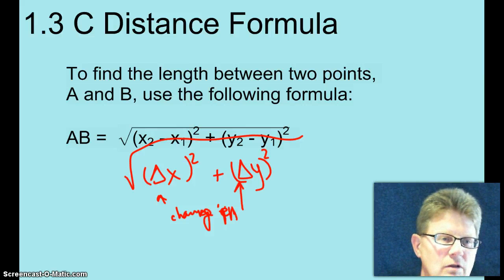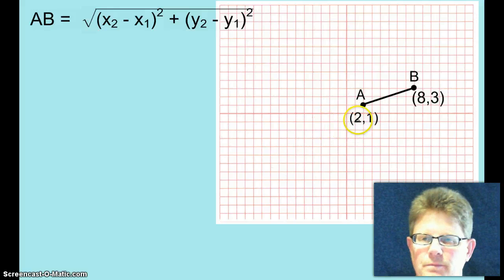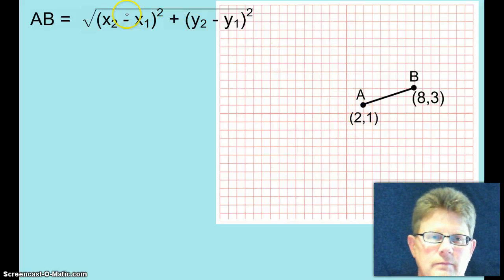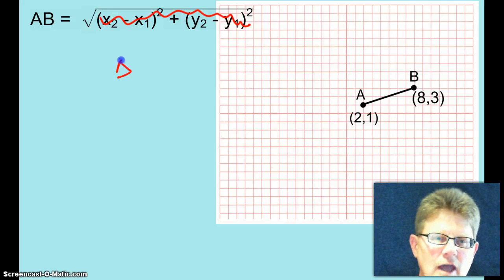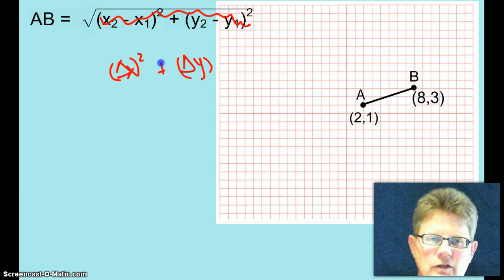Well, here we go. All right, get rid of this stuff. Gross. We're just going to use delta X quantity squared plus delta Y quantity squared.